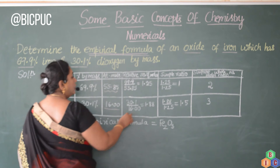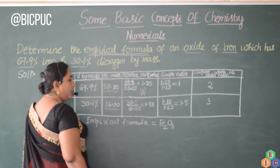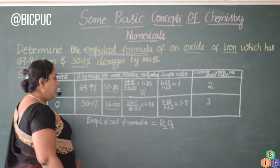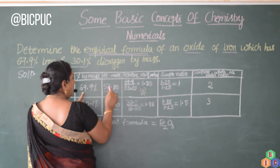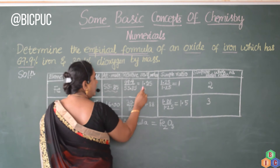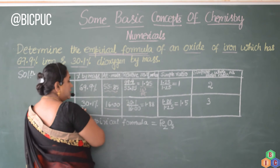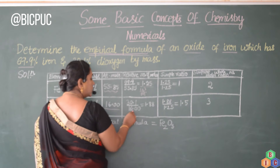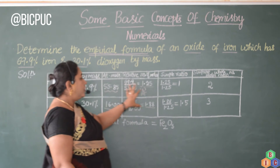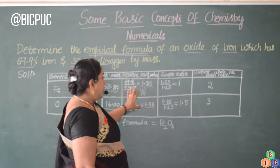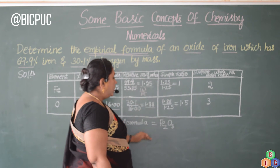Now we need to calculate the number of moles. The formula to calculate the number of moles is W divided by M, where W is the given mass and M is the molecular (atomic) mass. So for iron: 69.9 ÷ 55.85 = 1.25 moles. For oxygen: 30.1 ÷ 16 = 1.88 moles.